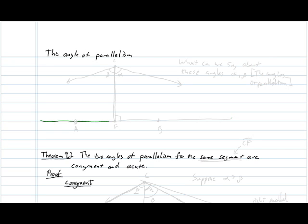In our last pencast we discussed the notion of parallel lines. If we have a line AB and a point C that is not on that line, then there would be two lines — a right parallel line and a left parallel line — that are in essence the closest a line can get to intersecting line AB, but still not intersect line AB.